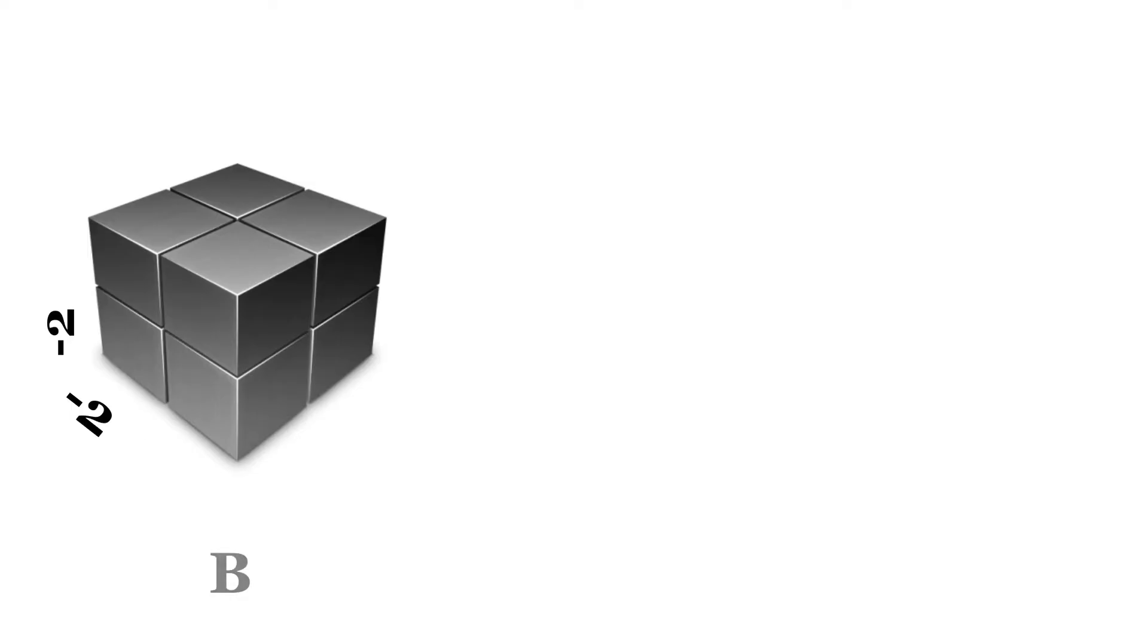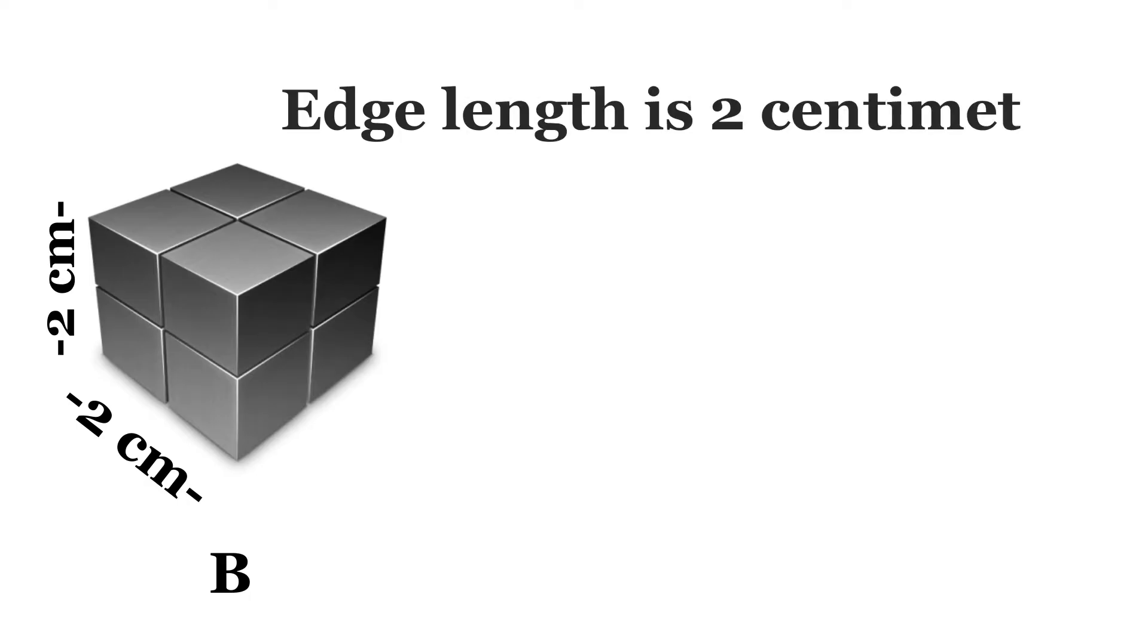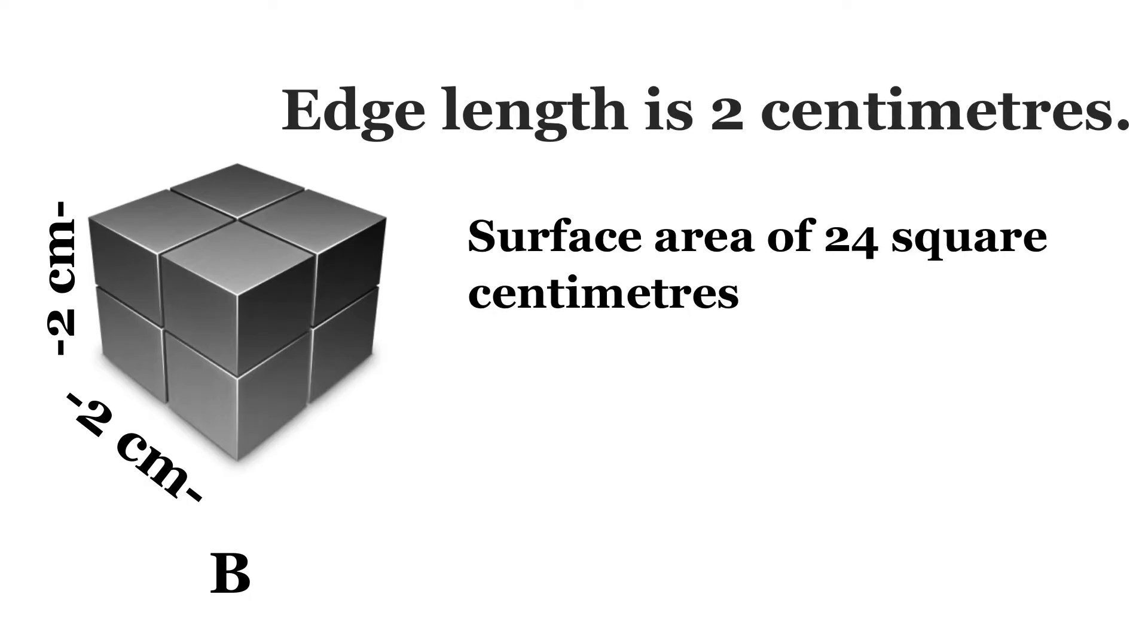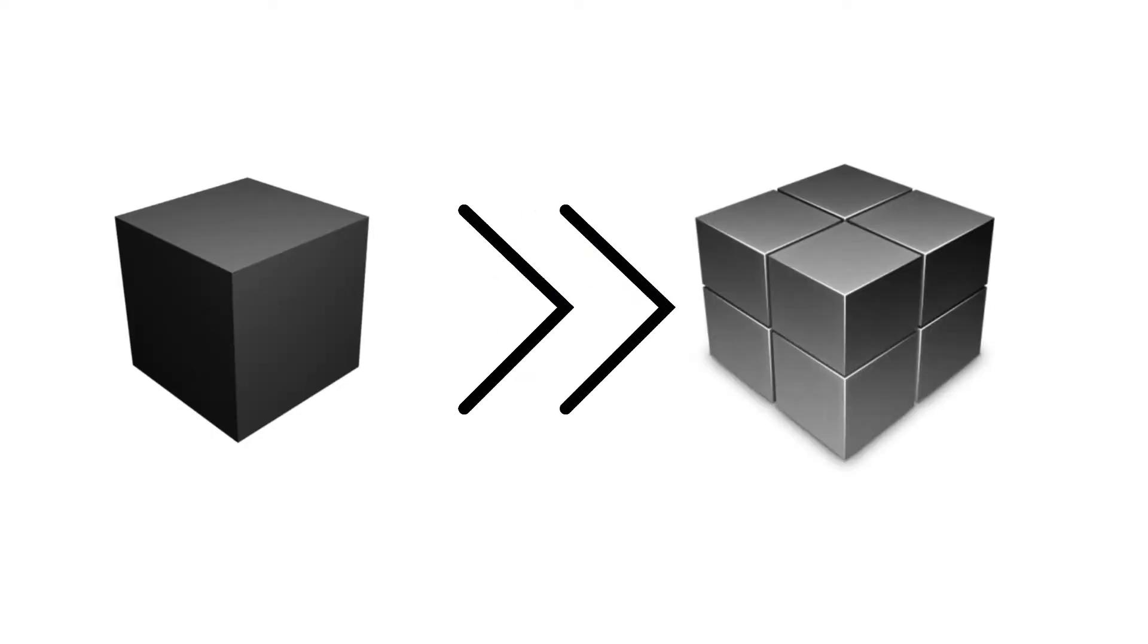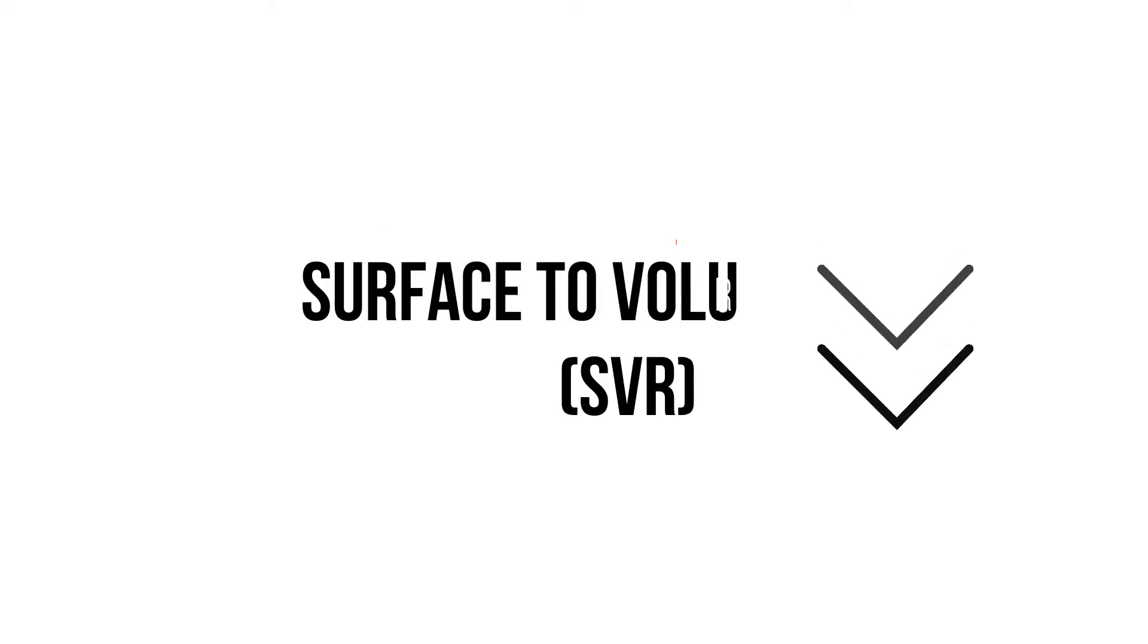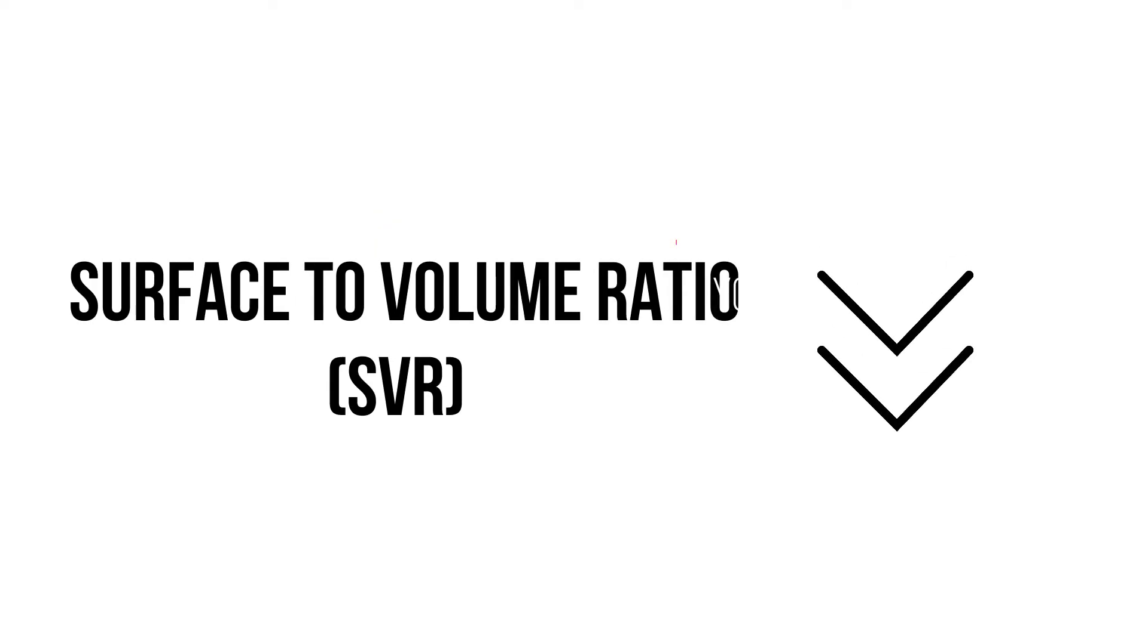Imagine a slightly larger cube, object B, made of these smaller cubes where its edge length is two centimeters. This means that a surface area of 24 square centimeters and a volume of eight cubic centimeters gives object B an SV ratio of three per centimeter. This means that a reduced amount of the material is available to interact with any external factors. As the cube's edge length goes on increasing, the SV ratio will decline and so will the expected interaction capability of the object.